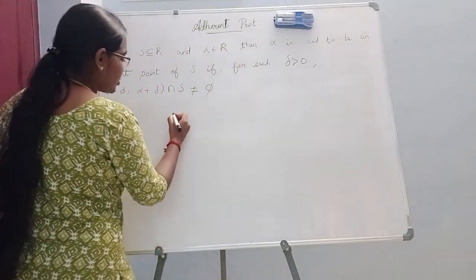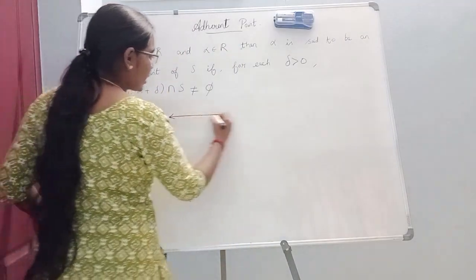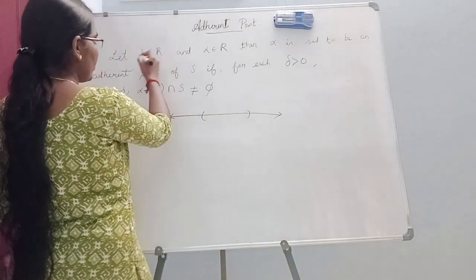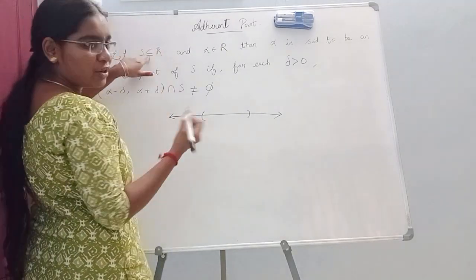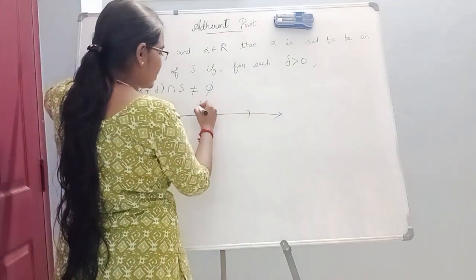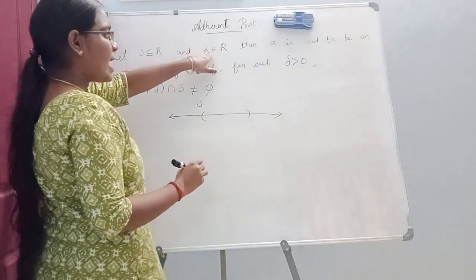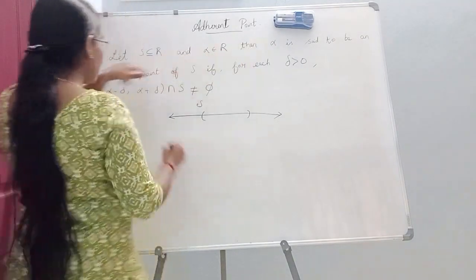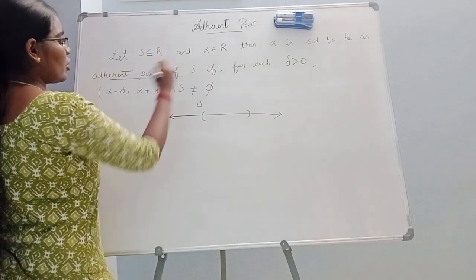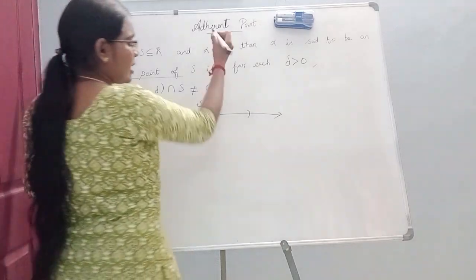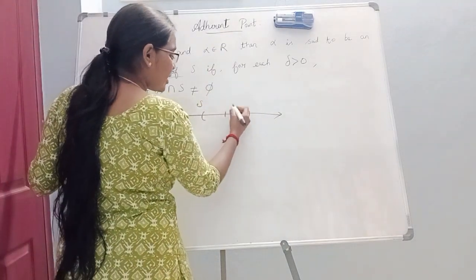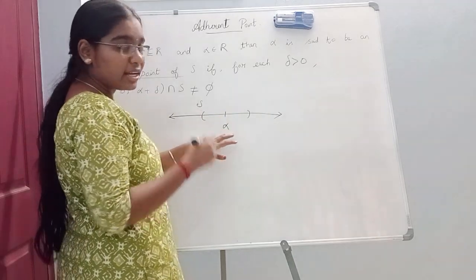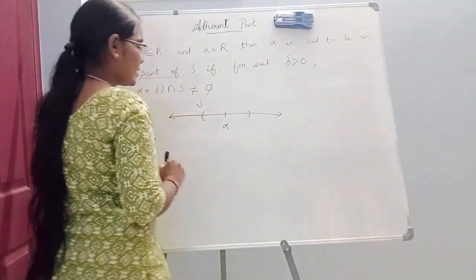This is the definition of adherent point. What are we talking about in adherent point? You can set it in an interval. Alpha belongs to R. We will say alpha is the adherent point of S.